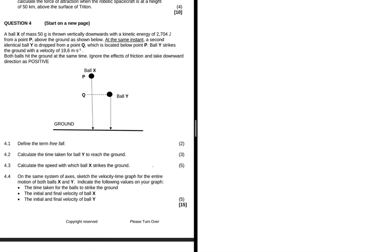4.1 says define the term freefall. Freefall is the motion of an object when the only force acting is gravitational force.